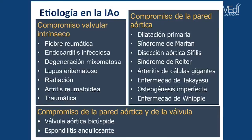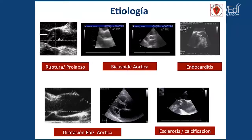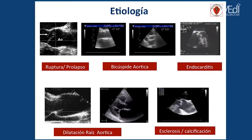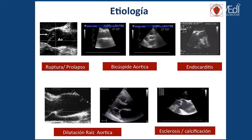En cuanto a la etiología, es muy importante determinar tres cosas: si es compromiso valvular exclusivamente lo que determina la insuficiencia aórtica, si es compromiso de la pared aórtica — es decir, la aorta ascendente — o si ambos están involucrados. Tenemos algunos ejemplos: ruptura o prolapso, bicúspide aórtica, endocarditis, dilatación de la aorta o esclerosis. Cada uno va a tener una evolución diferente y un pronóstico diferente.